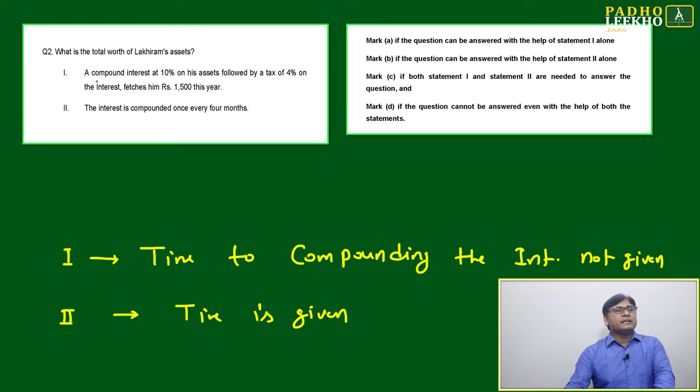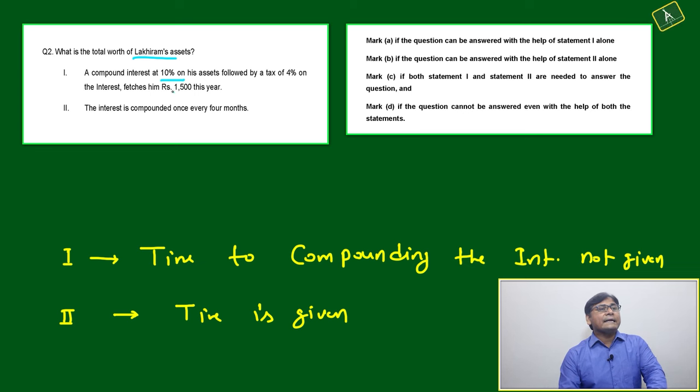We'll come to the next question, which is also data sufficiency: What is the total worth of Lucky Ram's assets? Statement one: Compound interest at 10% on his assets followed by a tax of 4% on the interest, which is 1,500 this year. This statement looks perfect, but the only issue is the same as the last question.